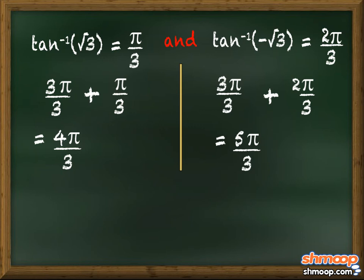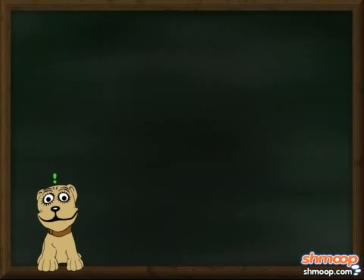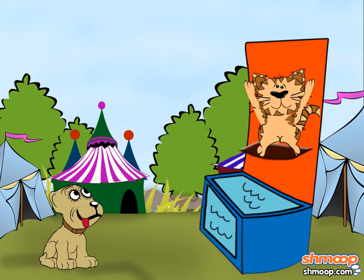So, his final answers are x = π/3, 4π/3, 2π/3, and 5π/3. Done. Woof. Unbelievable. Speedy has solved the trig equation.